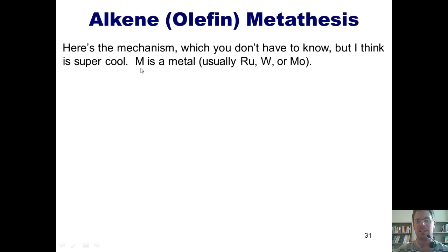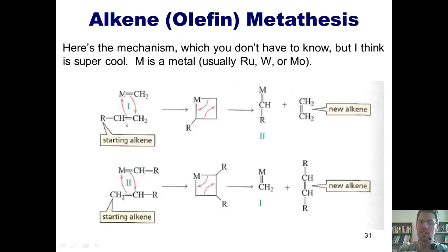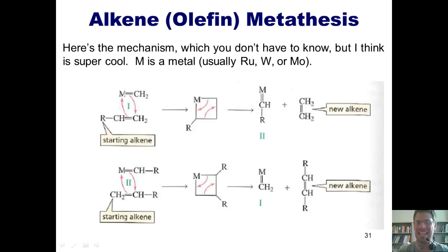The letter M in this mechanism represents a metal, which usually is ruthenium, tungsten, or molybdenum. I've got a metal double bonded to a carbon that interacts with my alkene and does this type of electron rearrangement to form a four-membered ring. A subsequent electron rearrangement forms a double bond from what was the internal carbon in my alkene to the metal itself, and also forms a double bond between what was the external carbon in my original alkene and the CH2 that was originally bonded to the metal, releasing it as ethene gas.